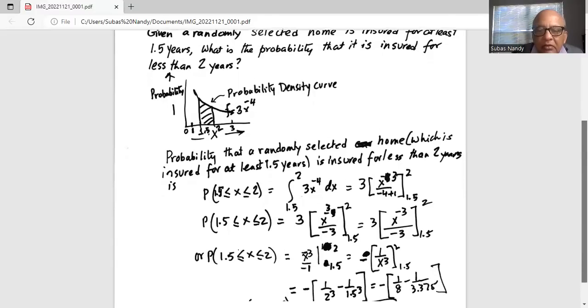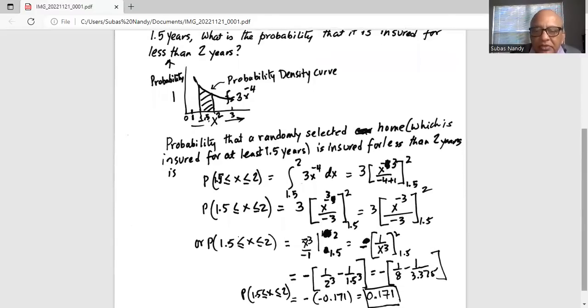Which is x cubed x to the power of minus 3 actually divided by minus 1 because 3 and 3 in the numerator and 3 in the denominator they cancel to get minus 1 in the denominator.